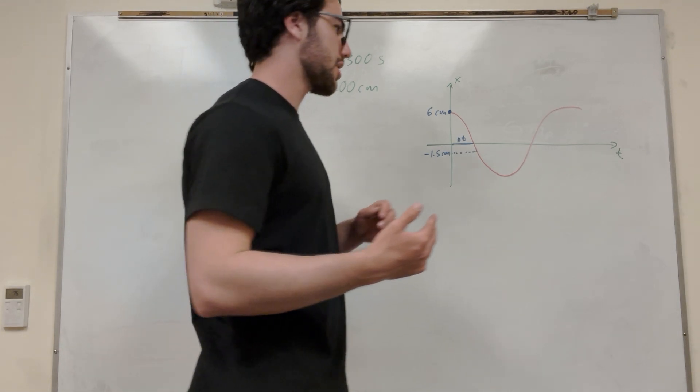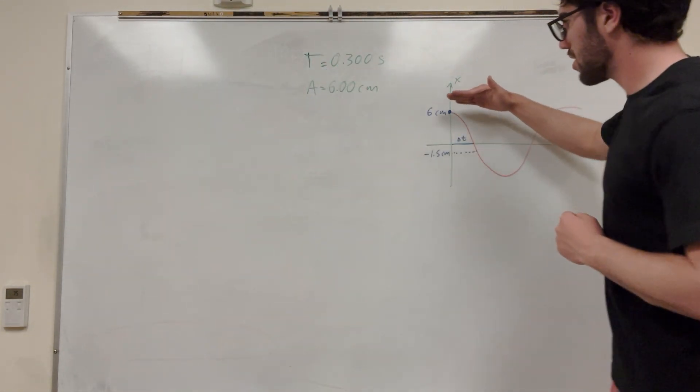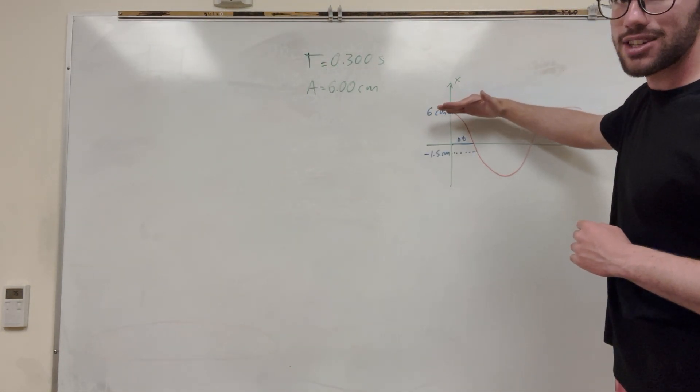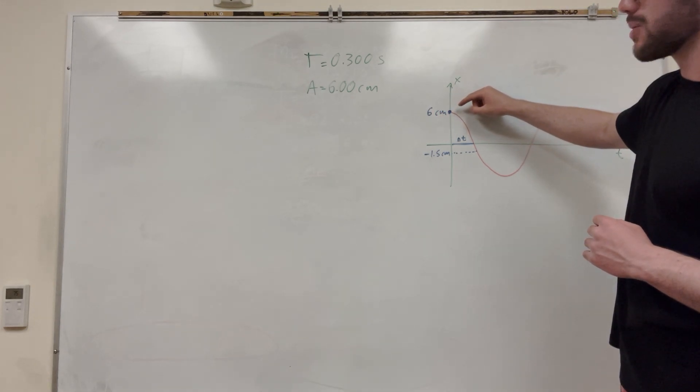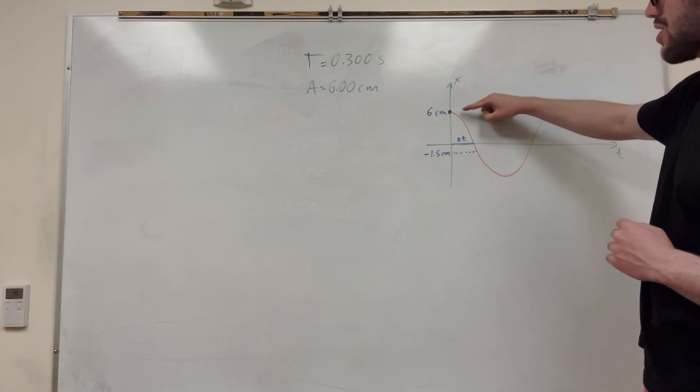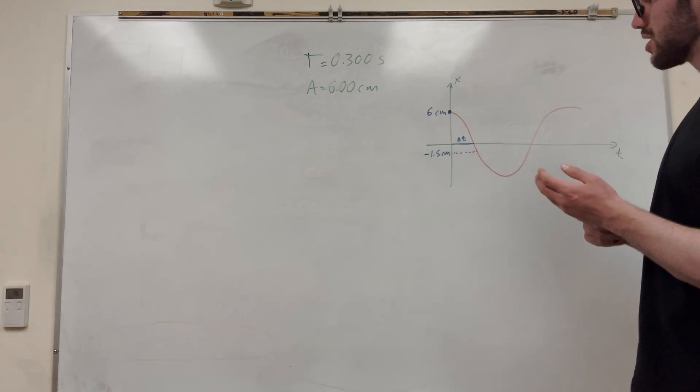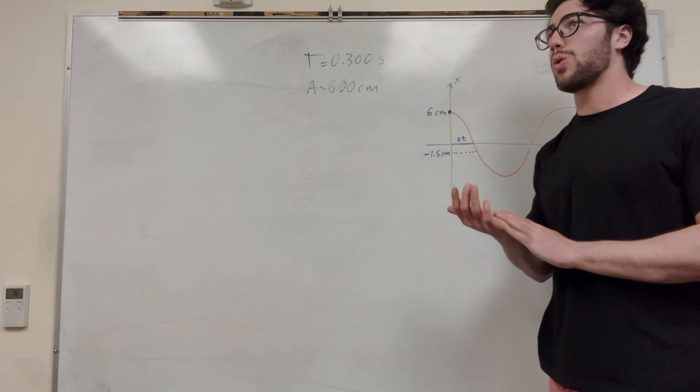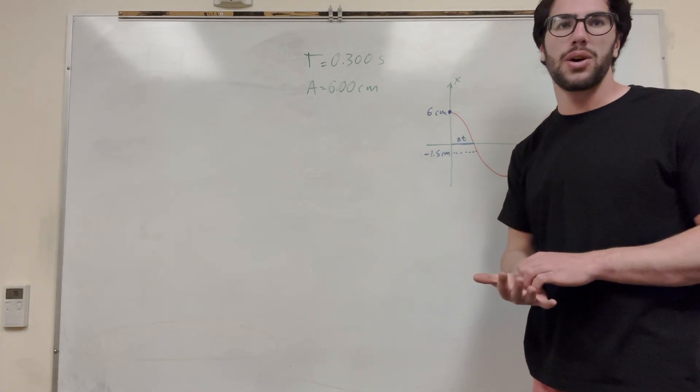If its velocity is equal to zero, the slope of the line is going to be zero at that point. So we can say that it's going to start at six centimeters, which is what it also says. So it starts at six centimeters, and its velocity is zero. So you can see that it's going to have this cosine function.